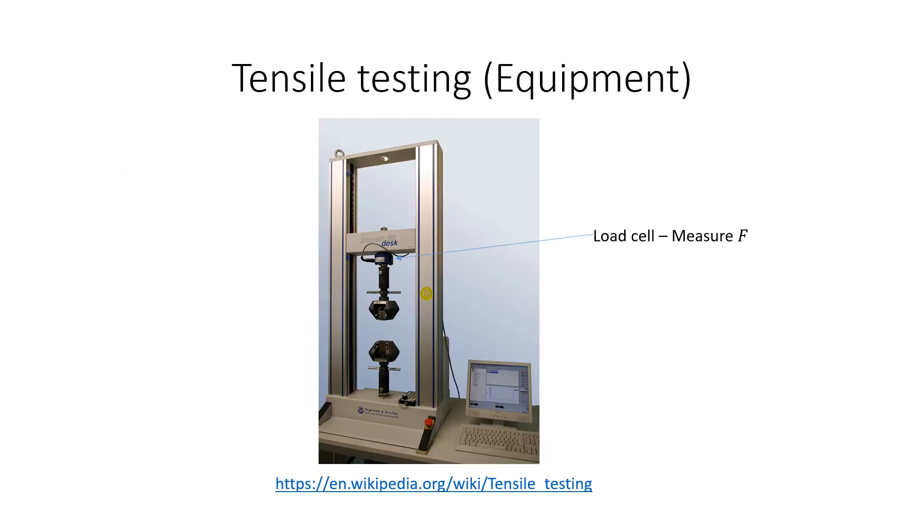To plot the required relationship, the specimen is mounted in a universal testing machine equipped with a load cell. The machine pulls on the specimen and measures the force.